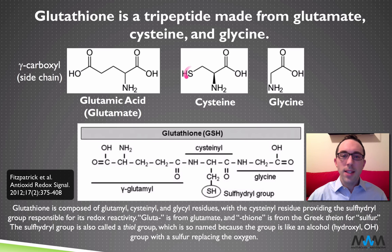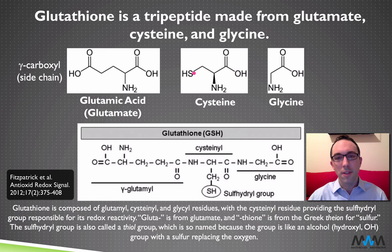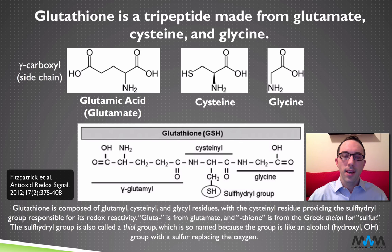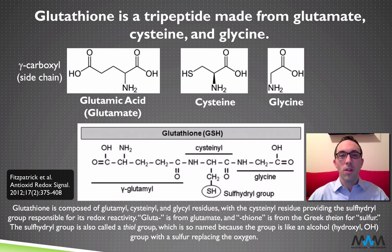This SH looks a lot like an OH and behaves a lot like an OH, except for the presence of sulfur. In chemistry, 'ol' refers to an OH group or an alcohol, so a thiol refers to an SH — the sulfur-containing analog of an alcohol. We can call this a thiol group, and we can call the glutathione molecule on the whole a thiol.